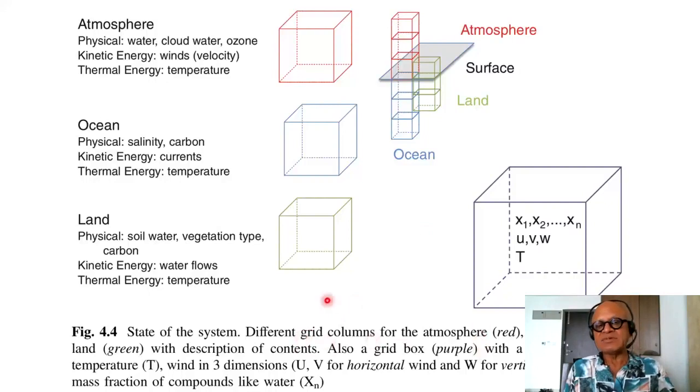Look at the state of the system. Different grid columns for the atmosphere, ocean and land with description of continents. Also a grid box, which is purple here, with a state vector of temperature, winds in three dimensions, and the mass fraction of compounds like water. What is a state vector? Basically it's a matrix which at each grid point contains these key variables that the model is predicting or integrating forward.